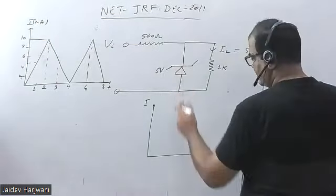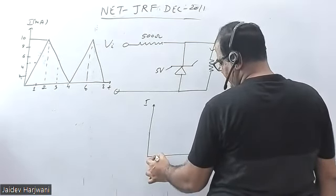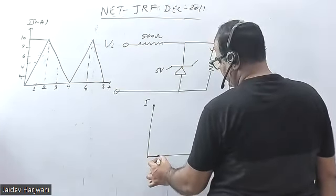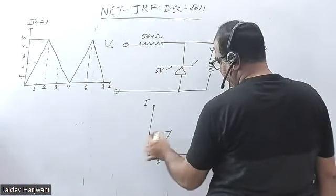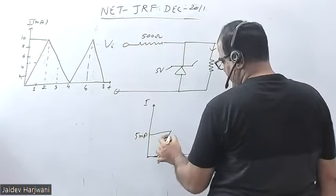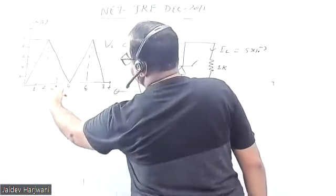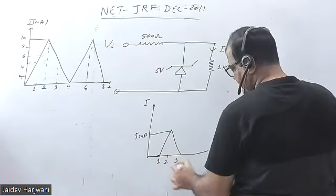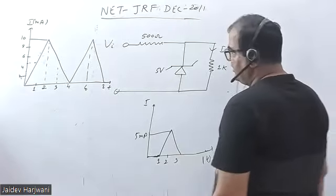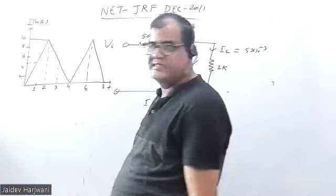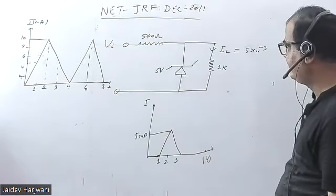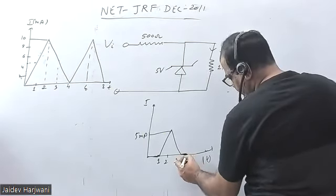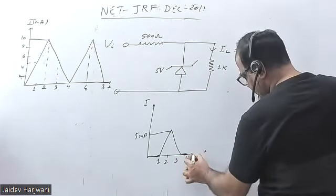If I draw the waveform: initially from 0 to 1 second there will be zero current. Then from 1 to 2 seconds there will be 5 milliamperes of current. From 2 to 3 seconds it will again be flowing at 5 milliamperes. Then from 3 to 4 seconds the current becomes less than 5 milliamperes, the diode becomes non-conducting, so the current will be zero again.